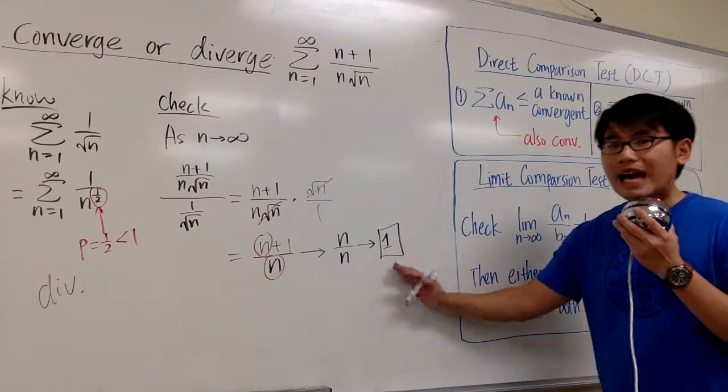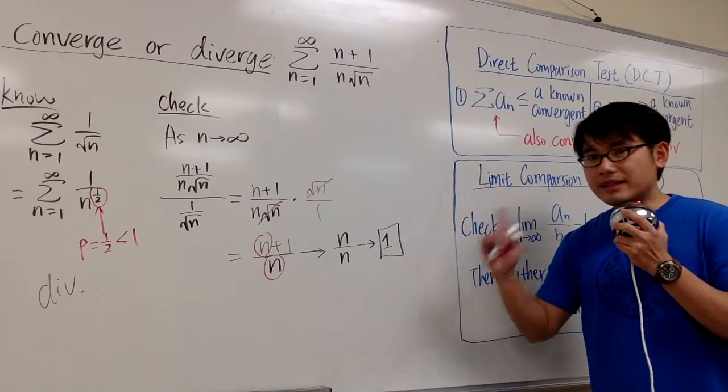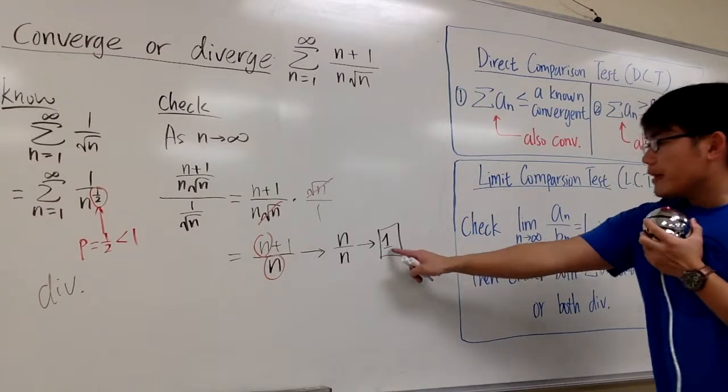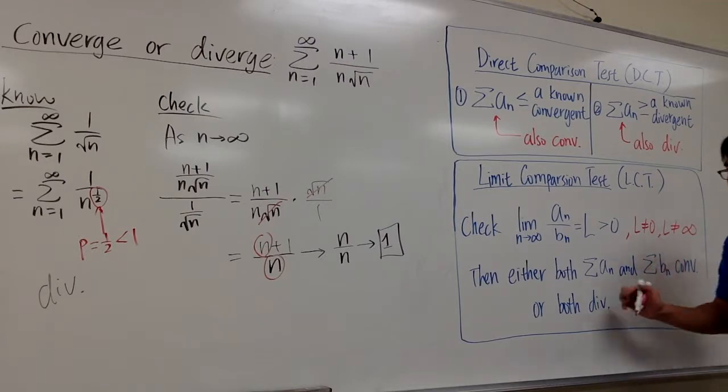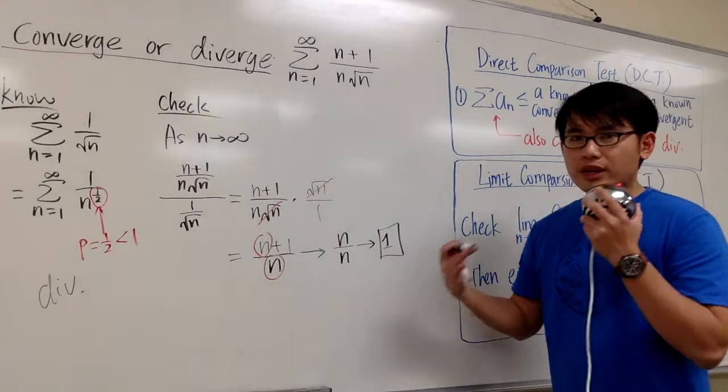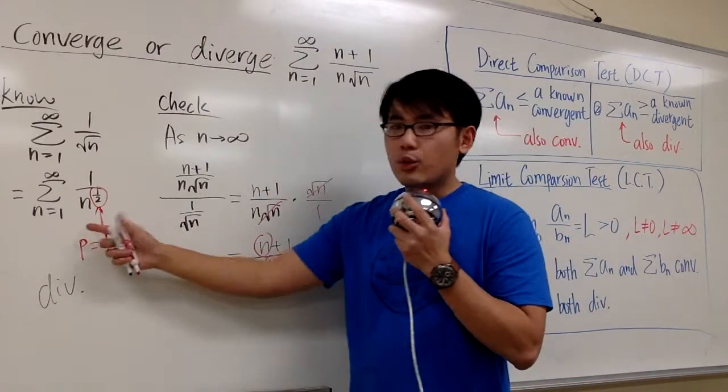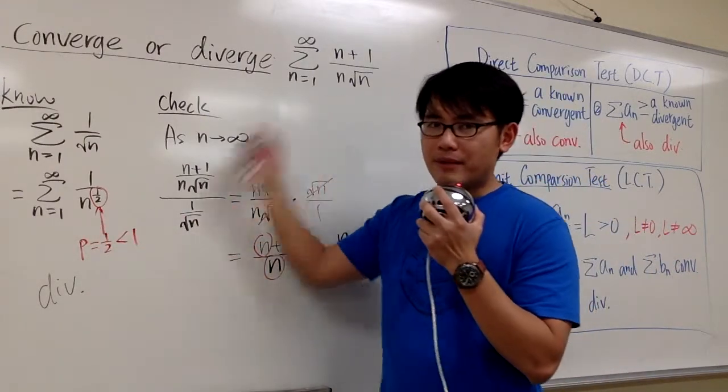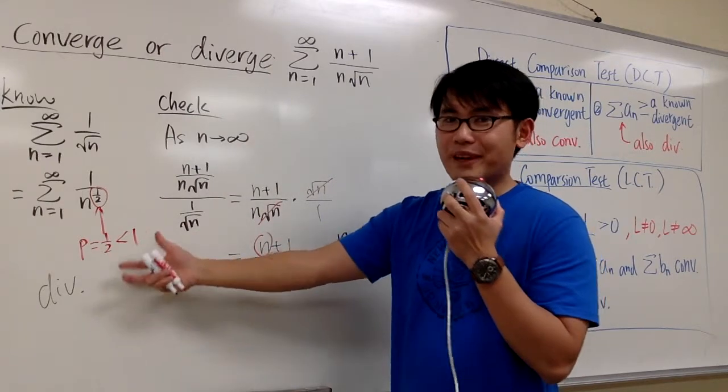So you see that we have a nice limit for this case. And in this case, for the nice limit, nice means that it's greater than 0, it's not infinity, and it's not 0. So this is good. We get to do a conclusion. The conclusion is, this and that will have either both of them are convergent, or both of them are divergent.